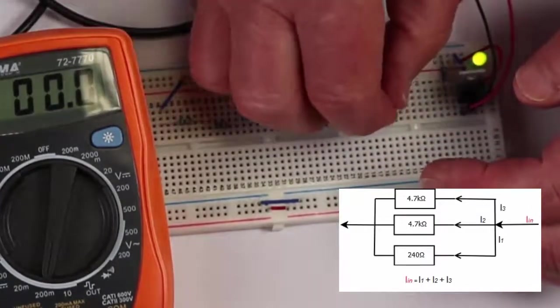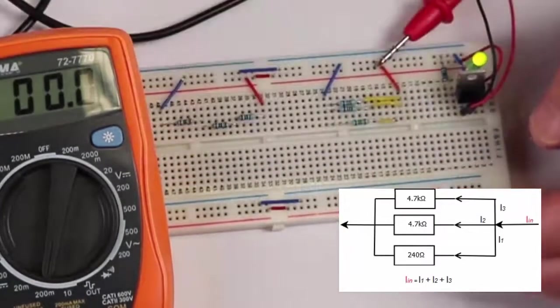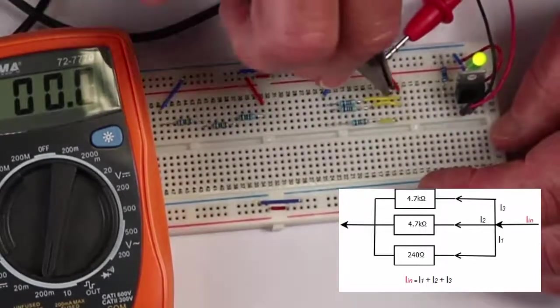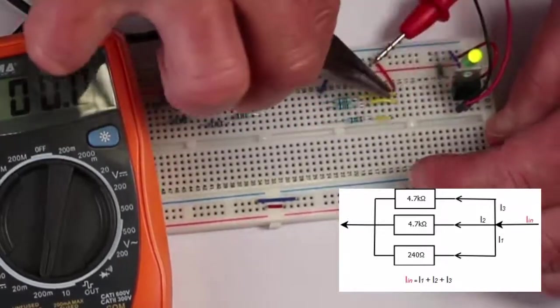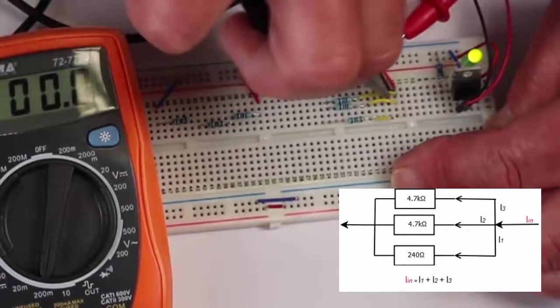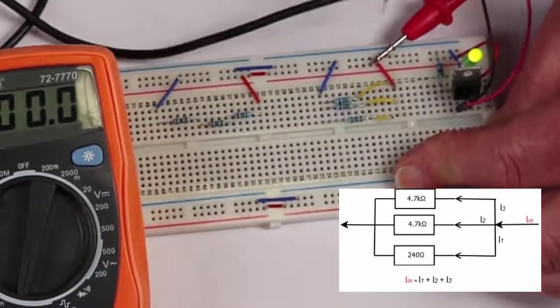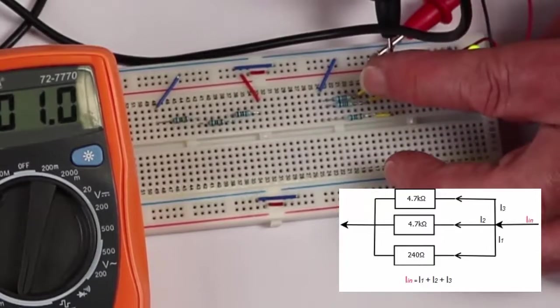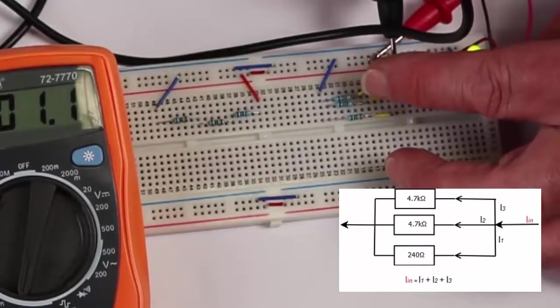And we'd expect to see the same current flow through this total resistor because it's the same value as that second resistor. We'll just check to make sure. And we can see the current there is 1mA.